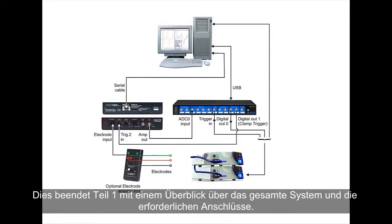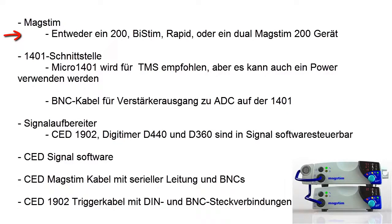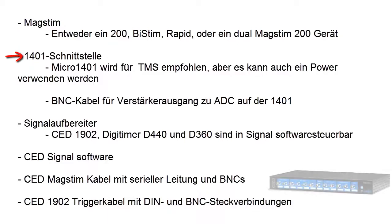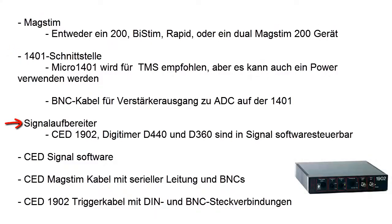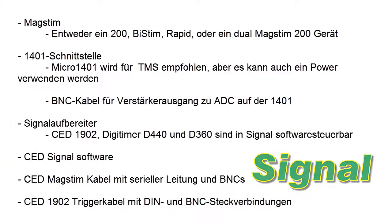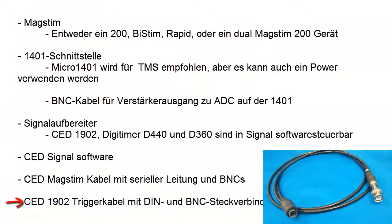This concludes part 1, looking at the whole system and the required connections. To summarise, you will need a MagStim — either a 200, BiStim or Rapid device, or dual MagStim 200 devices — a 1401 interface (the Micro 1401 is recommended for TMS, but you can use a Power 1401), BNC cables for amplifier output to ADC waveform input on the 1401, a signal conditioner (the CED1902, Digitimer D440 and D360 are software controllable in signal), a copy of CED signal software, a CED MagStim cable with serial line and BNCs, and a CED 1902 trigger cable with DIN and BNC connectors.